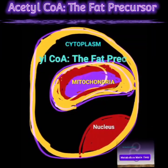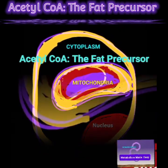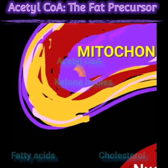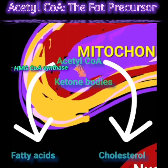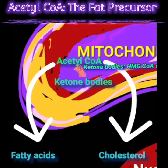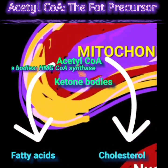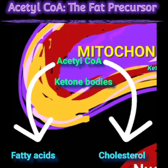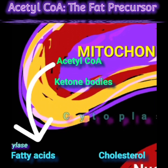Acetyl-CoA is the common precursor for ketone body, fatty acid, and cholesterol biosynthesis, using three distinct pathways. Ketone body biosynthesis takes place in the mitochondria and the rate-limiting enzyme is HMG-CoA synthase. Fatty acid synthesis takes place in the cytoplasm and the rate-limiting enzyme is acetyl-CoA carboxylase.